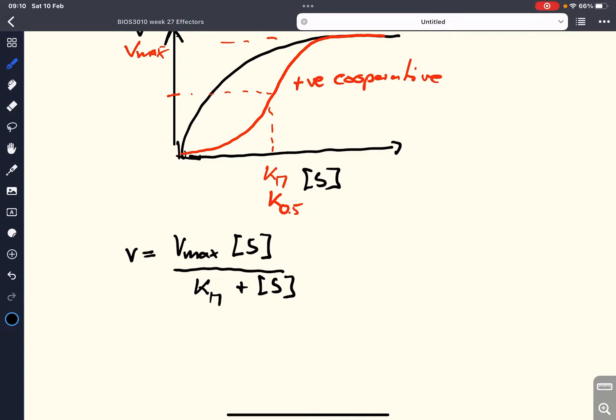And the extension of this Michaelis-Menten equation is the Hill equation. And what we need to do is we put in a factor or coefficient H to everything apart from Vmax. And this H is also known as the Hill coefficient, which tells us the degree of cooperativity.